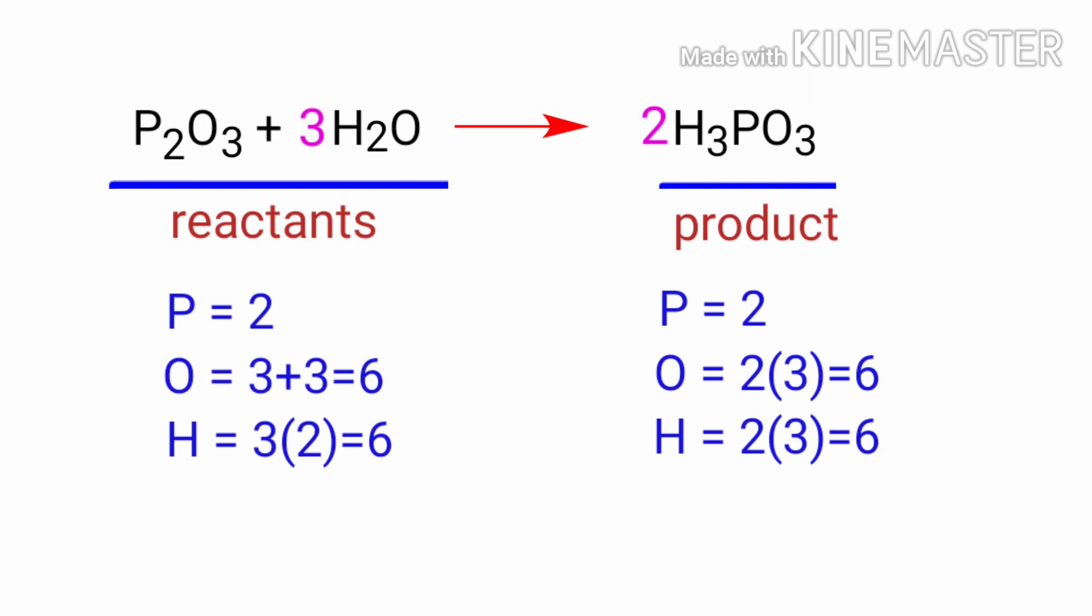The equation is now balanced. There are 2 phosphorus atoms, 6 oxygen atoms, and 6 hydrogen atoms on both sides.